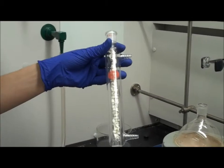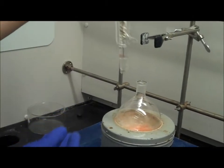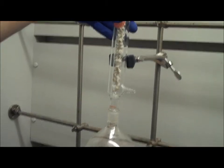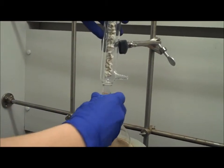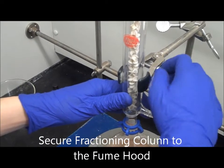After the fractioning column is filled with packing material, connect it to the round bottom flask placed in the mantle. All glasswork should be clipped together throughout the experiment to ensure no glass breakage. The fractioning column should also be clamped to the round bottom flask.